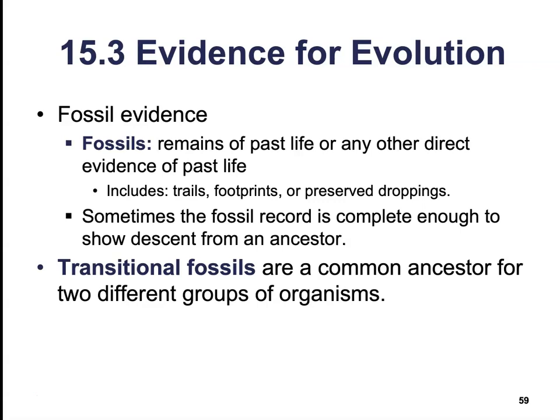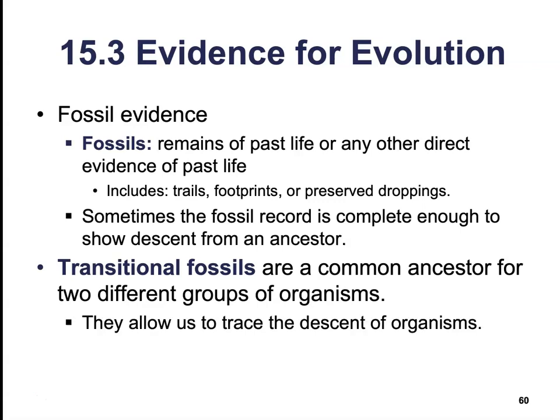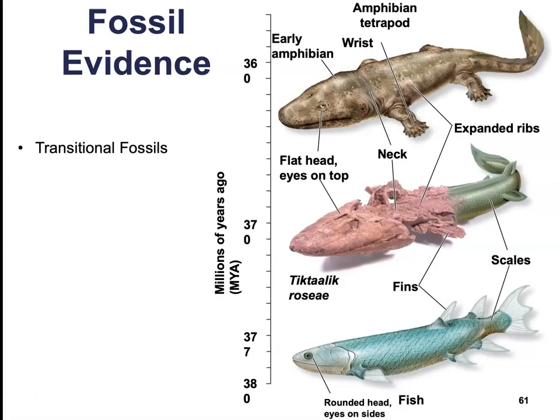When this is the case, we have what are known as transitional fossils. They are a common ancestor for two different groups of organisms, and they allow us to trace the descent of those individual organisms.